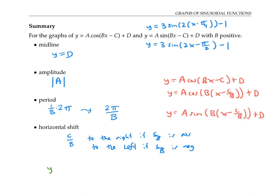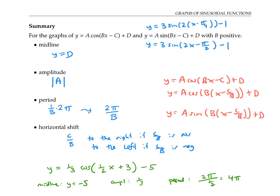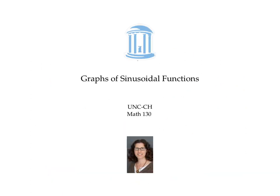As a final example, to graph y equals one third cosine of one half x plus three minus five: the midline is at y equals negative five, the amplitude is one third, the period is two pi divided by one half which is four pi, and after rewriting in factored form, the horizontal shift is six units to the left. This horizontal shift is sometimes called the phase shift. And that's all for graphs of sinusoidal functions.